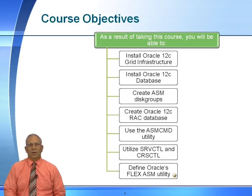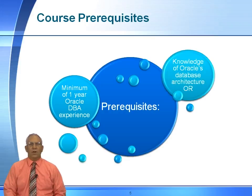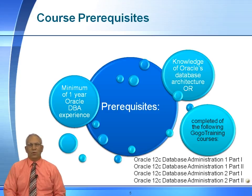The prerequisites of this course would be a minimum of one year Oracle DBA experience, or knowledge of Oracle database administration, or having completed the following GOGO training courses: Oracle 12C Database Administration 1 Part 1, Oracle 12C Database Administration 1 Part 2, Oracle 12C Database Administration 2 Part 1, as well as Oracle 12C Database Administration 2 Part 2.